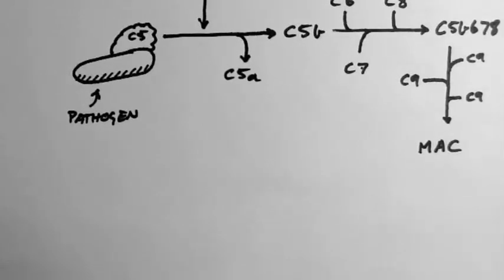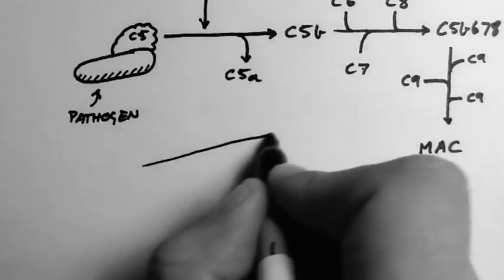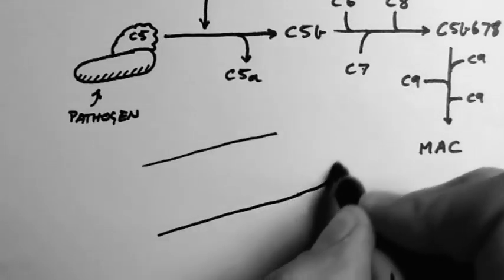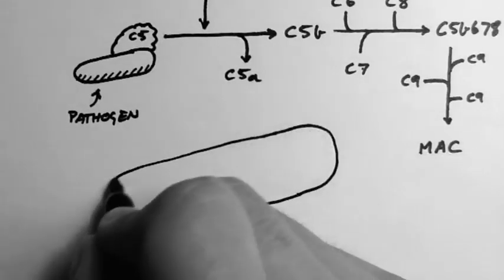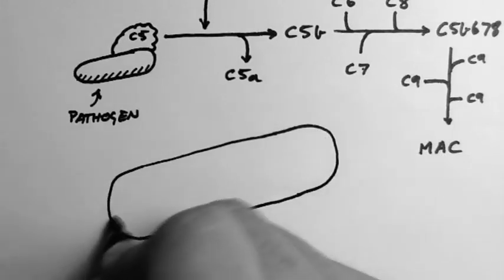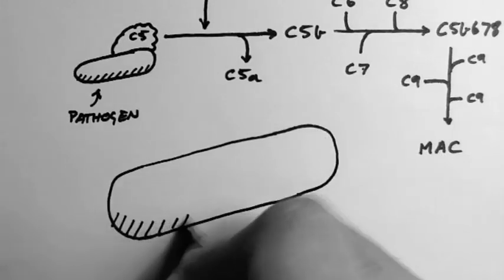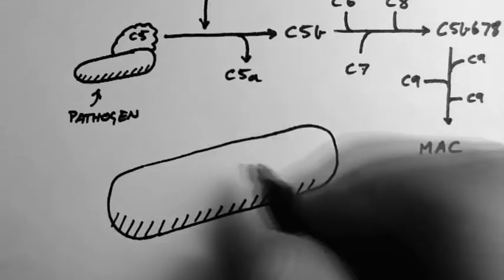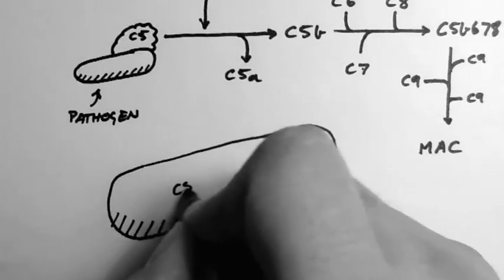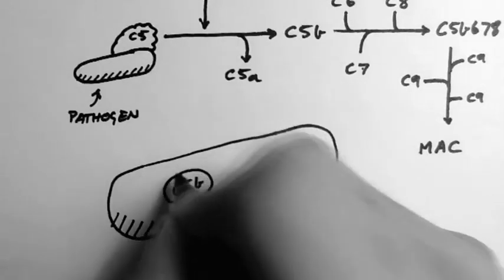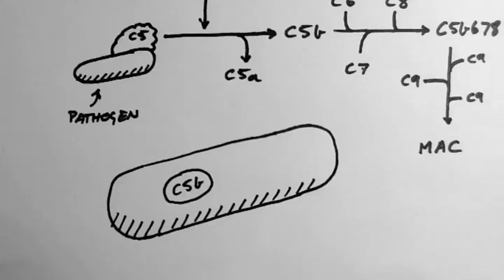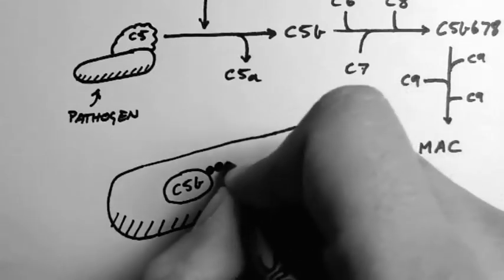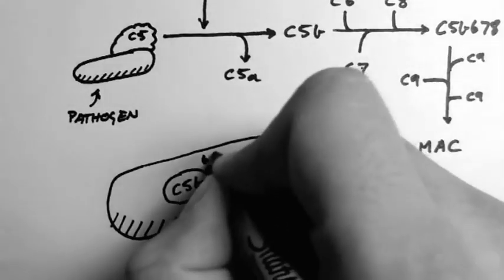I'll draw out how it goes together here. Here's a pathogen, and on its surface is the molecule C5b. Now the first three molecules to join this line up with C5b, and they're known as C6, C7 and C8.